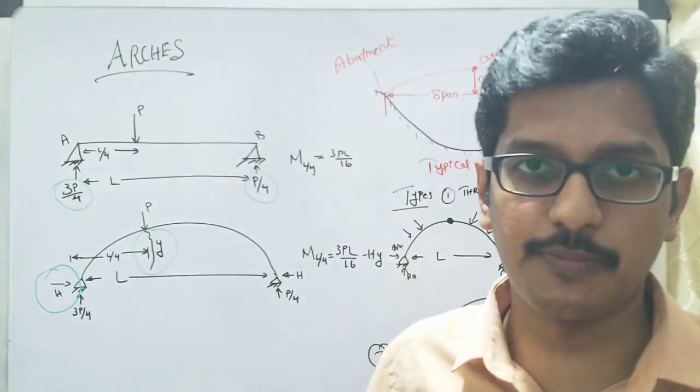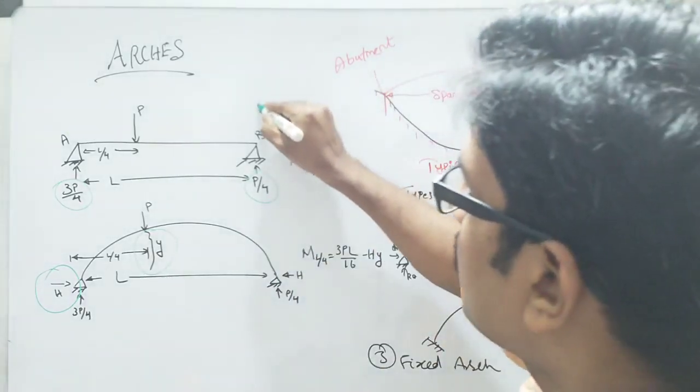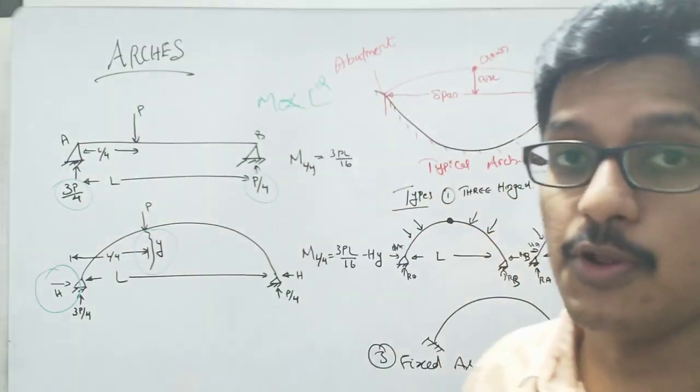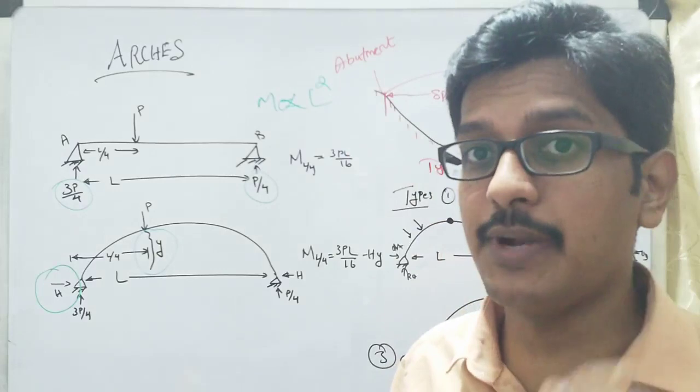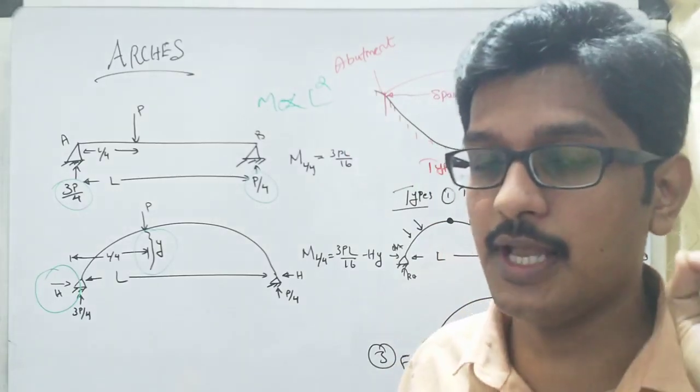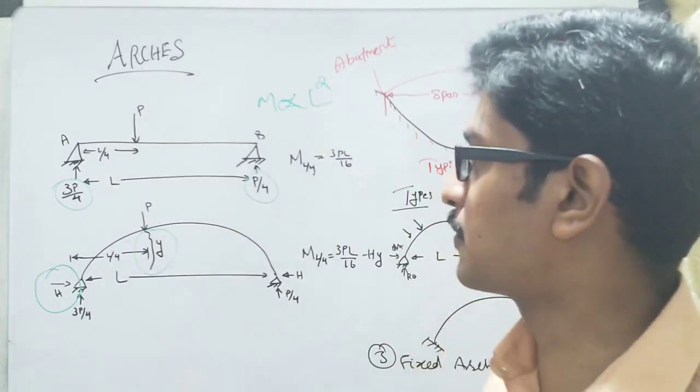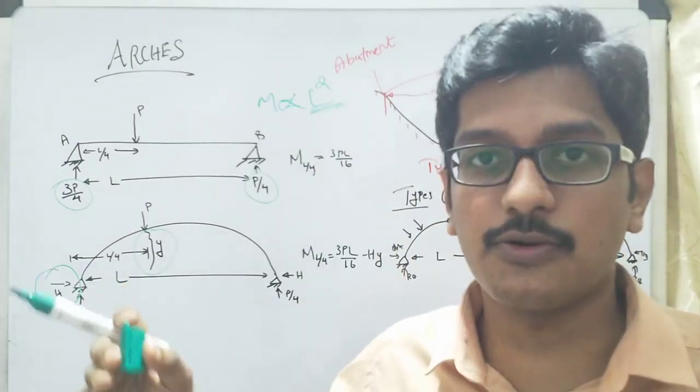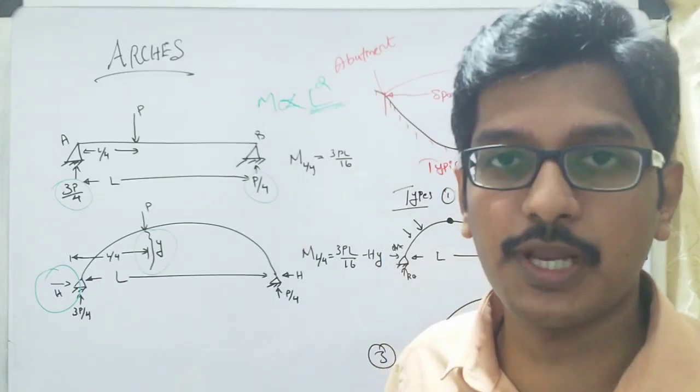If you consider a concentrated or uniformly distributed load acting over a simply supported beam, the maximum bending moment is WL square by 8. If the span is very large or very long, it is very uneconomical for a beam to be constructed.